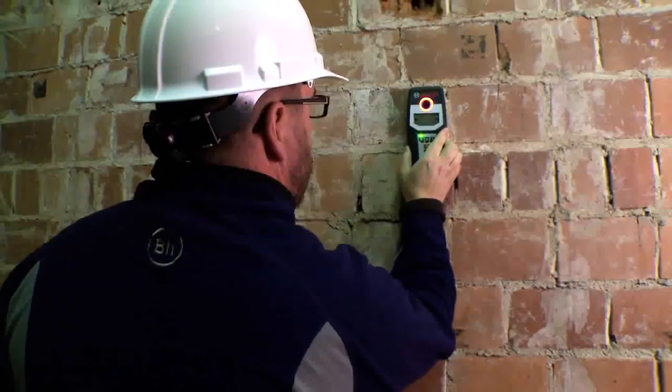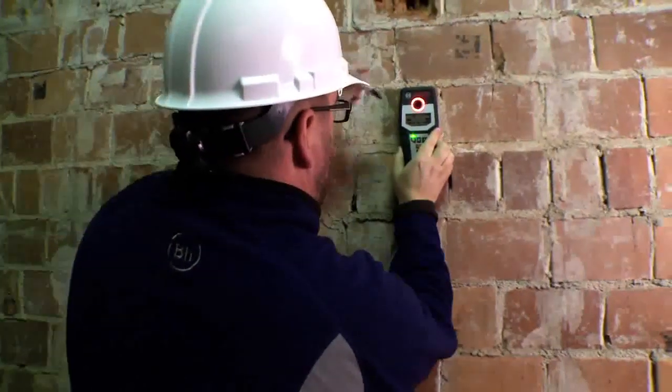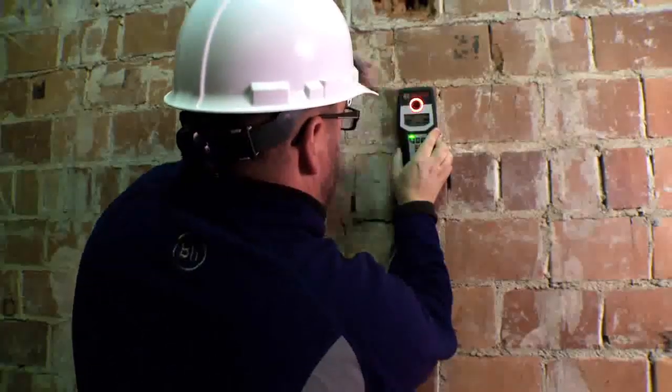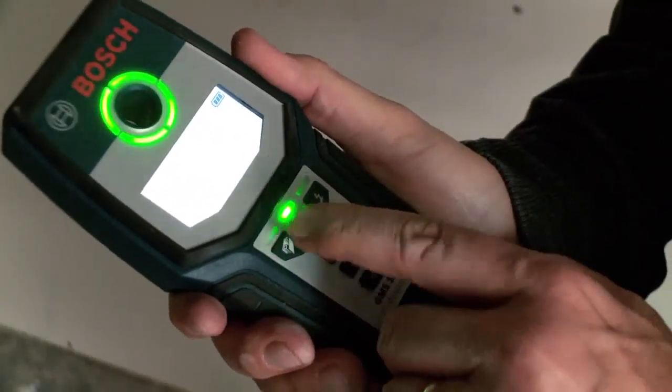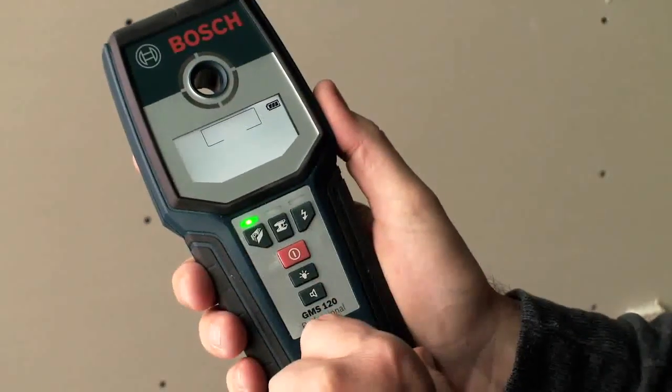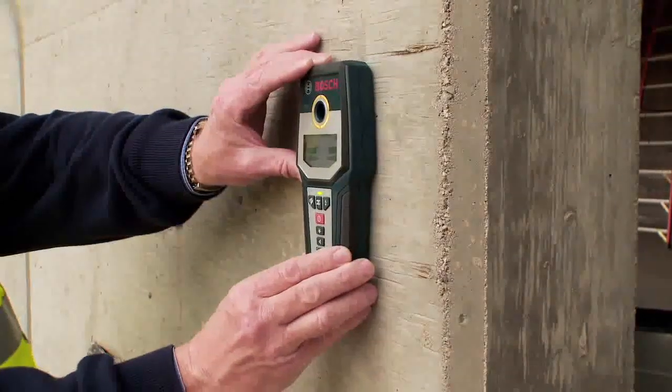The tool pinpoints the center of the object and has a convenient marking hole for leaving reference marks. The easy-to-view LED screen shows more detailed information, such as mode of operation, strength of signal, and type of material found.